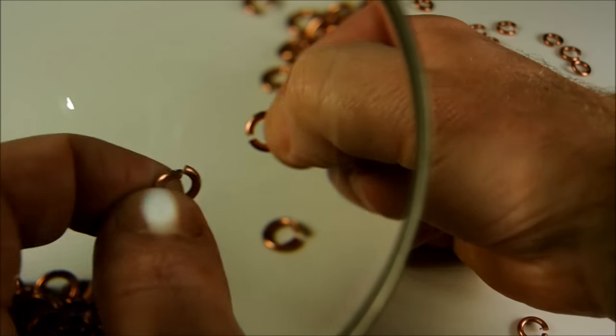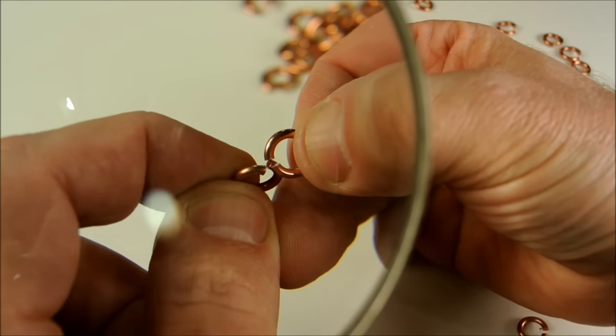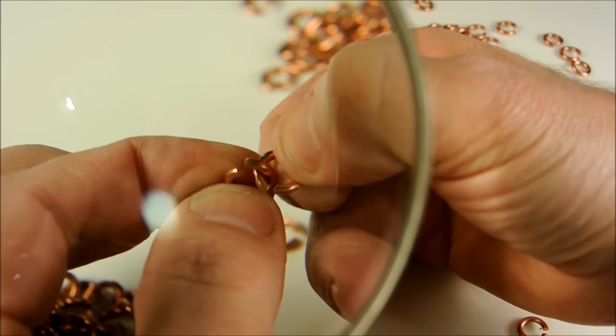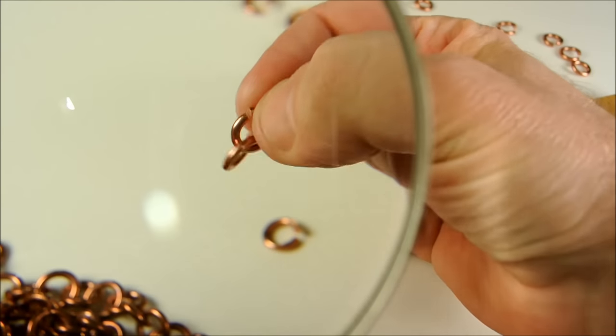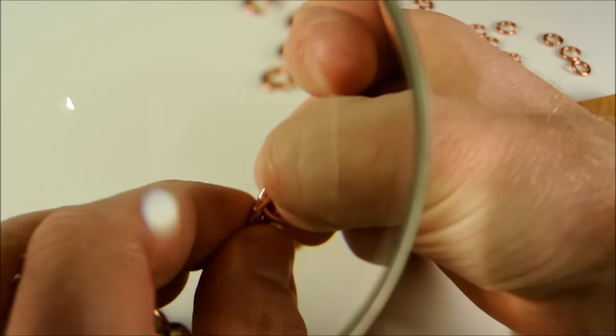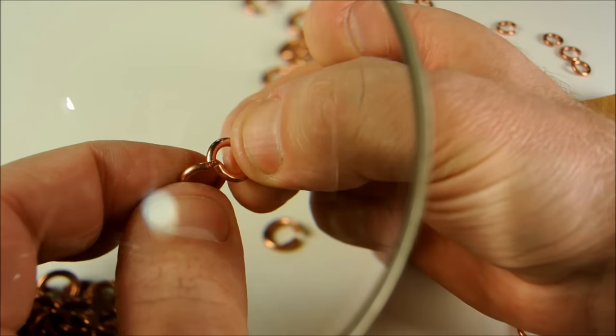Now let me show you one of the great things about making a chain this way. You don't have to modify the links at all. They go together by pressing the two cuts together like that, and now it won't fall off unless you make the two cuts line up again. This makes the assembly process very easy.